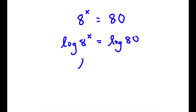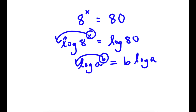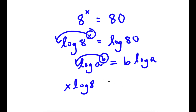Now, if I have something in the form log a to the power of b, I can move the exponent b to the front, so this can equal b times log a. So in this case, I have log 8 to the power of x, so I can move x to the front. So now I have x times log 8 is equal to log 80.